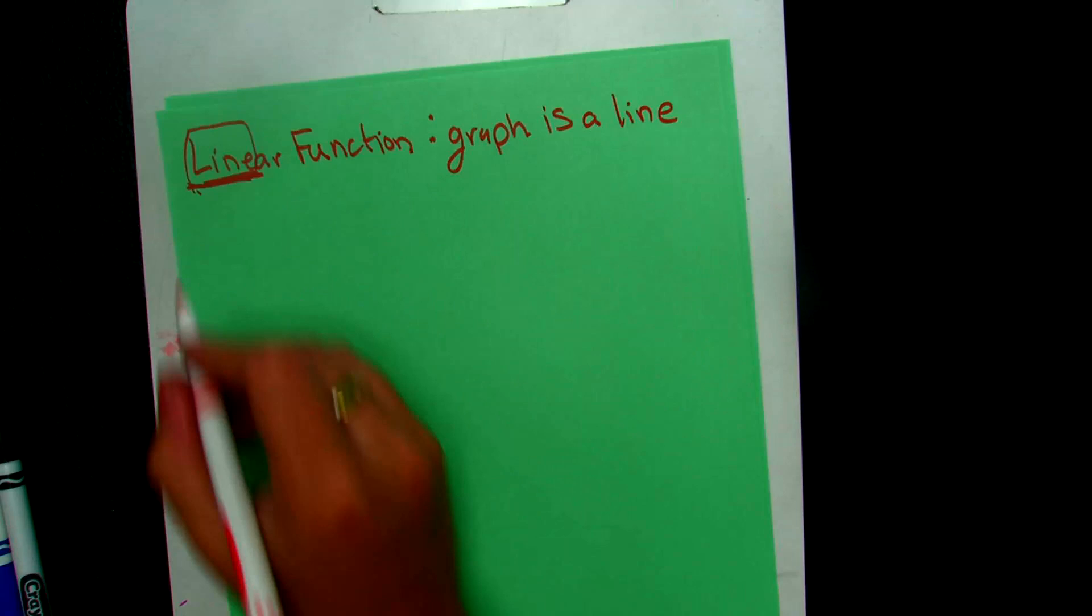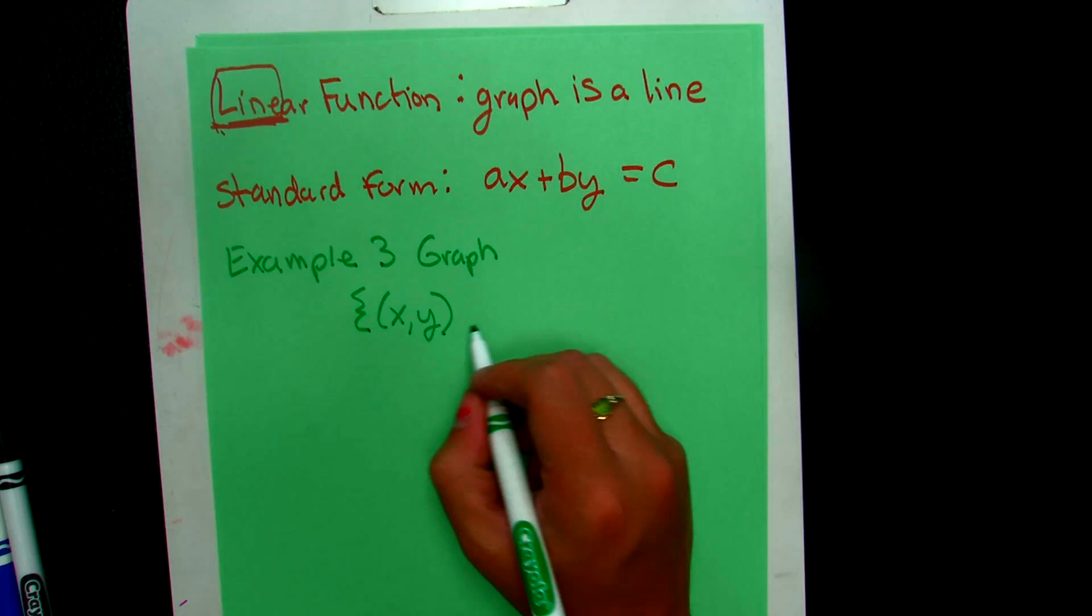So let's say we want to graph this function, the ordered pairs (x, y) such that x + y = 5. So in order to graph this function, I want to first solve for y. So I'm going to subtract x from both sides and I get y = -x + 5. Then I'll put that in function notation. So I'm going to replace y with f(x).